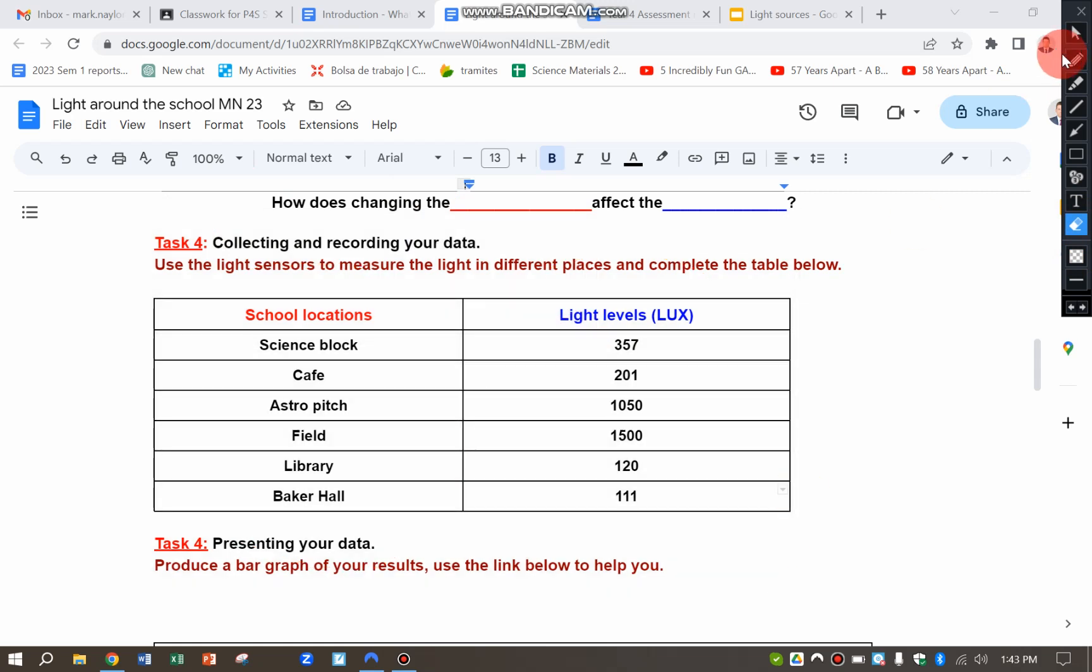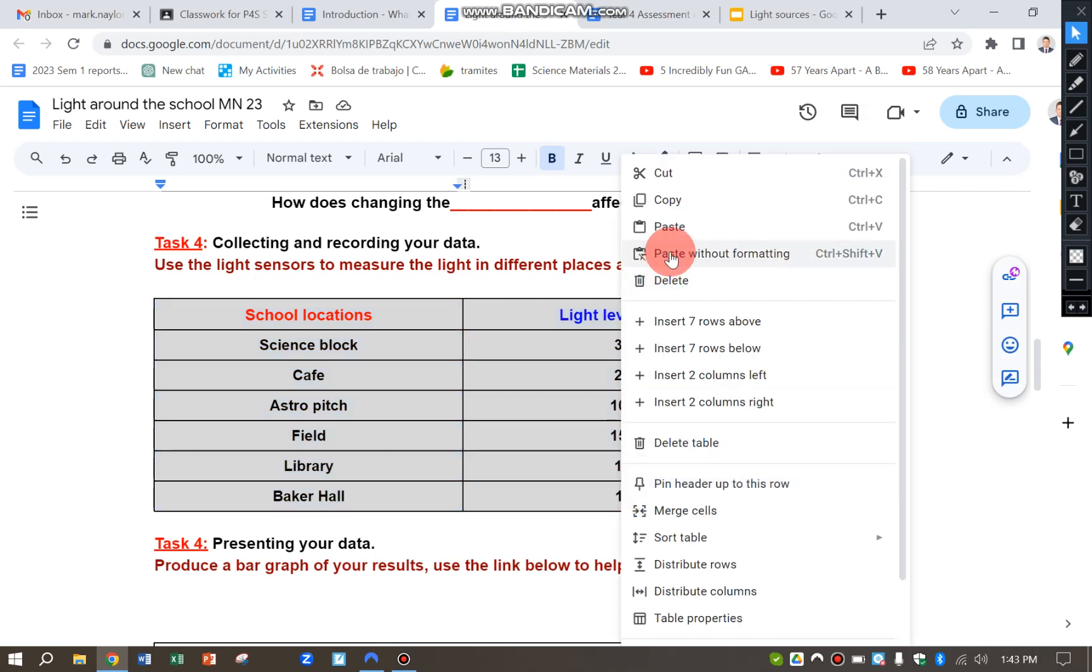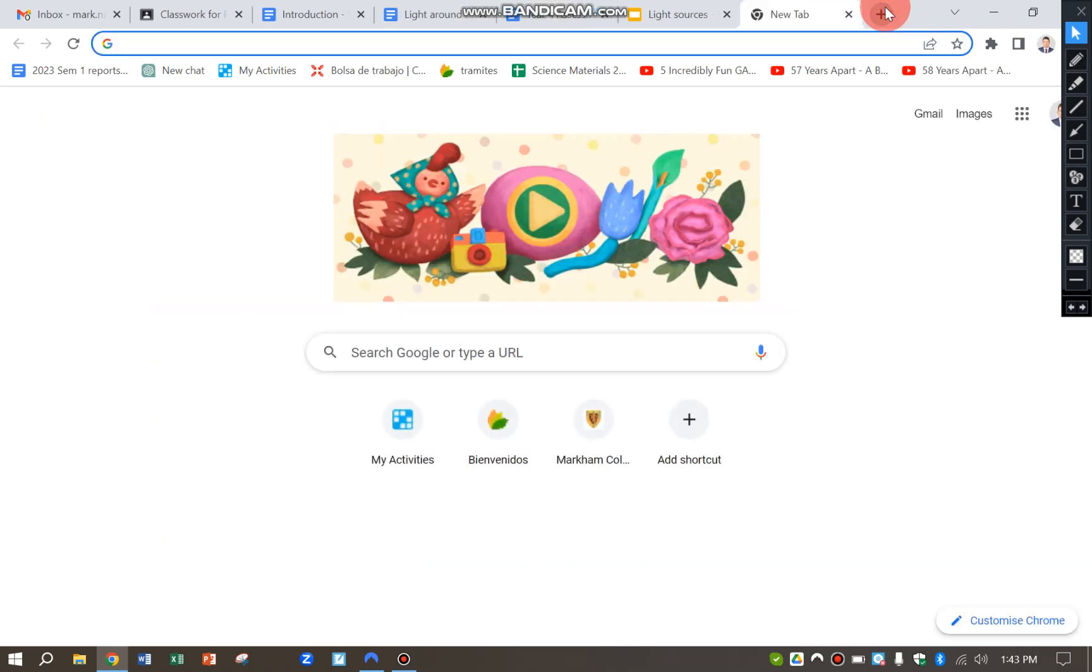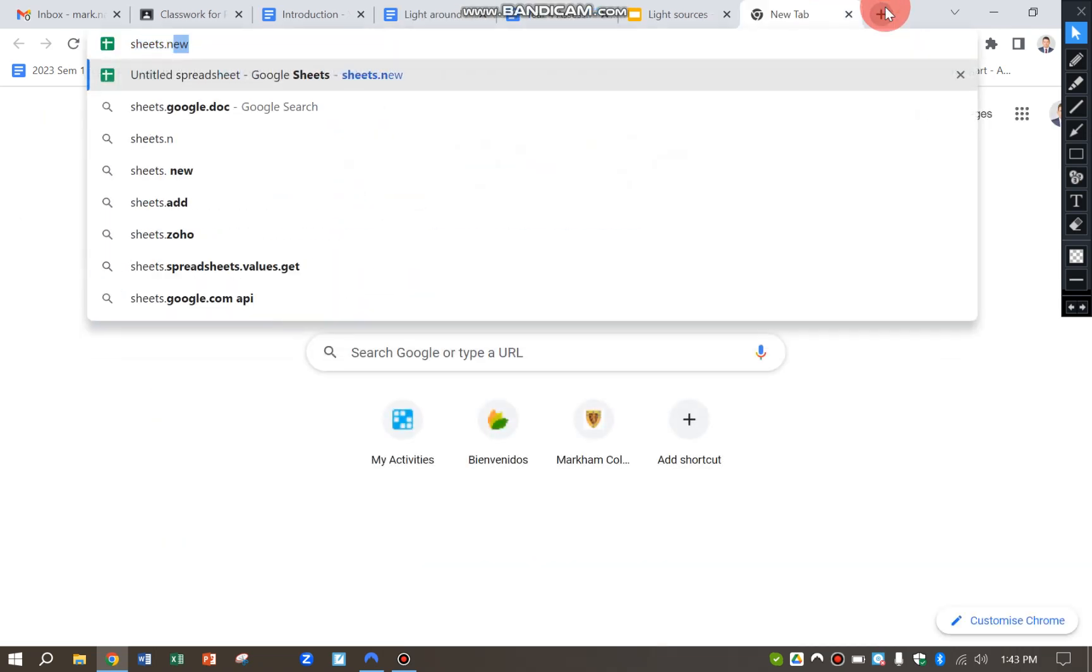So now I'd like to show this information in a bar graph. So firstly, I highlight the whole table, right click and copy, or I could do control C, open a new tab, sheets.new.